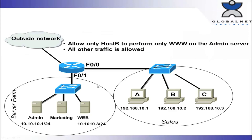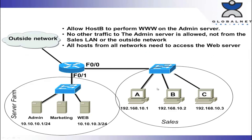Let's take a look at our next business requirements. We have the same network. Allow host B to perform port 80 on the admin server — so our first line will be the same. But the next few lines are different: no other traffic to the admin server is allowed, not from the sales LAN or the outside network. It doesn't say just port 80; it says no other traffic, period. Then all hosts from all networks need to access the web server. So we're not going to end with 'permit IP any any.' We're going to be very succinct. Again it looks like permit, deny, permit — but more succinct than the last one.